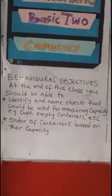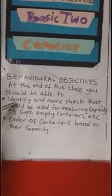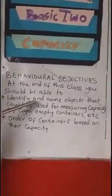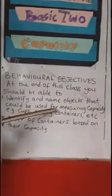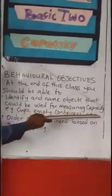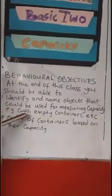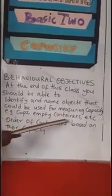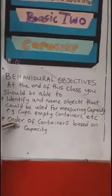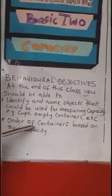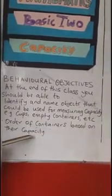At the end of this class, you should be able to identify and name objects that could be used for measuring capacity — for example, cups and empty containers. Also, order containers based on their capacity.